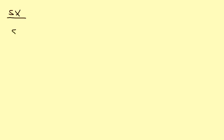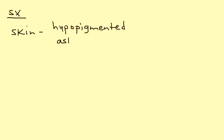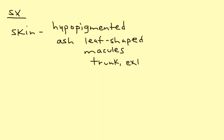Let's get into the symptomatology — in particular, what kind of things will be presented in a clinical vignette to help identify tuberous sclerosis. The very first skin problem to emphasize is one described as hypopigmented, ash leaf-shaped macules. I encourage you to look these up on the internet to see what they look like. These will be found on the trunk and sometimes also in the extremities.